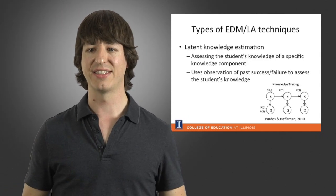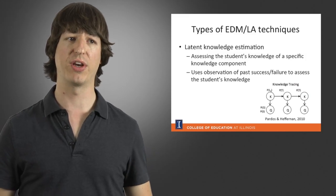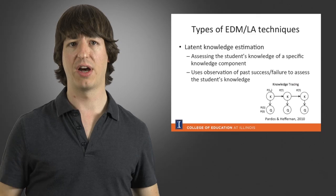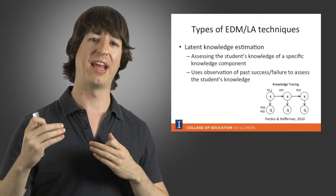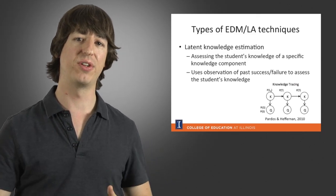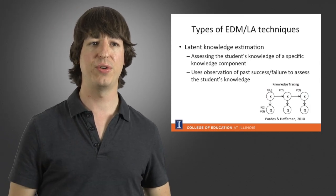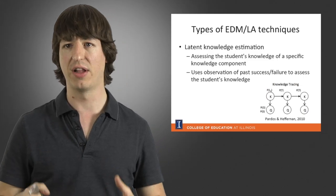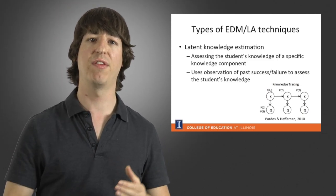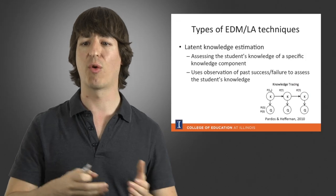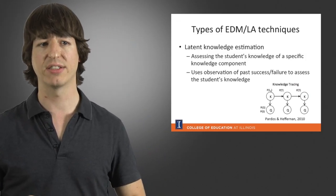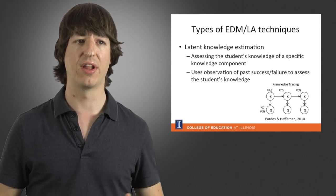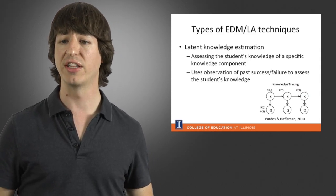Another type of analysis we do a lot in educational data mining is what we call latent knowledge estimation. The idea is that we want to get an estimation of what the student knows and what the student doesn't know. We assess the student's knowledge of a specific knowledge component using observations of when the student succeeded or failed at applying that knowledge component in the past. One of the popular algorithms used for this is called knowledge tracing.